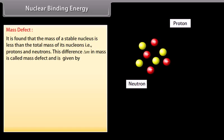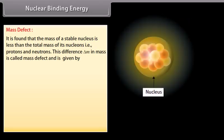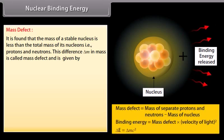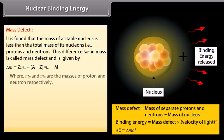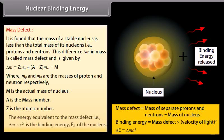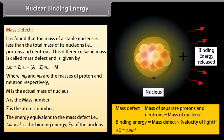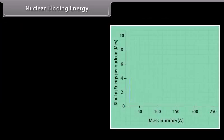Nuclear binding energy. Mass defect. It is found that the mass of a stable nucleus is less than the total mass of its nucleons, that is protons and neutrons. This difference delta M in mass is called mass defect and is given by delta M is equal to ZMP plus E minus Z into MN minus M, where MP and MN are the masses of proton and neutron respectively. M is the actual mass of nucleus, A is the mass number, Z is the atomic number. The energy equivalent to the mass defect, that is delta M into C square, is the binding energy EB of the nucleus. From the graph we note that: